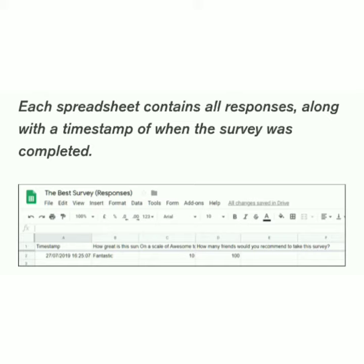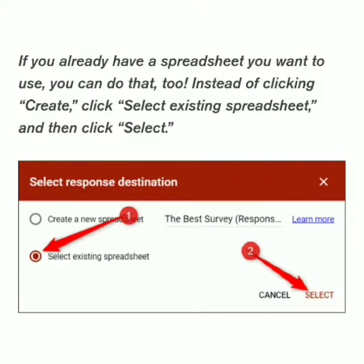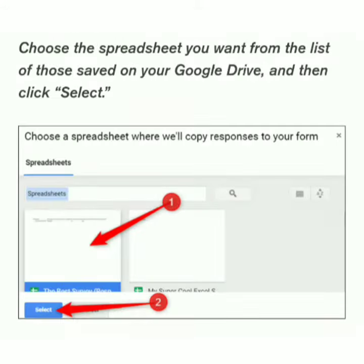Each spreadsheet contains all responses along with a timestamp of when the survey was completed. If you already have a spreadsheet you want to use, instead of clicking Create, click 'Select existing spreadsheet' and then click Select.